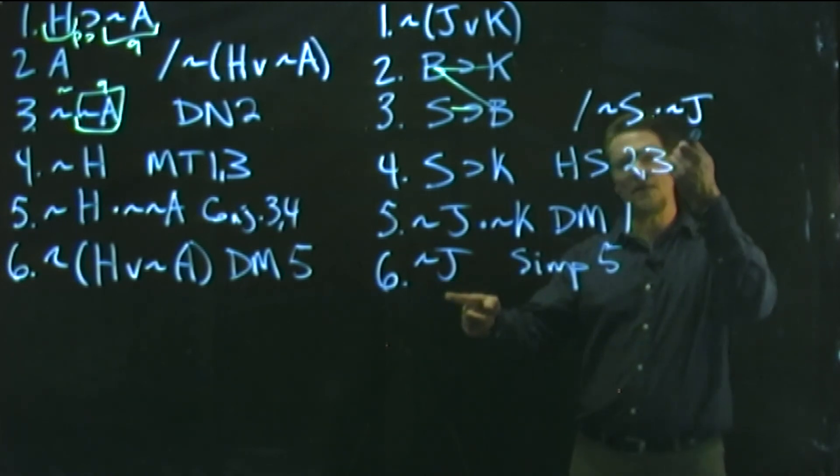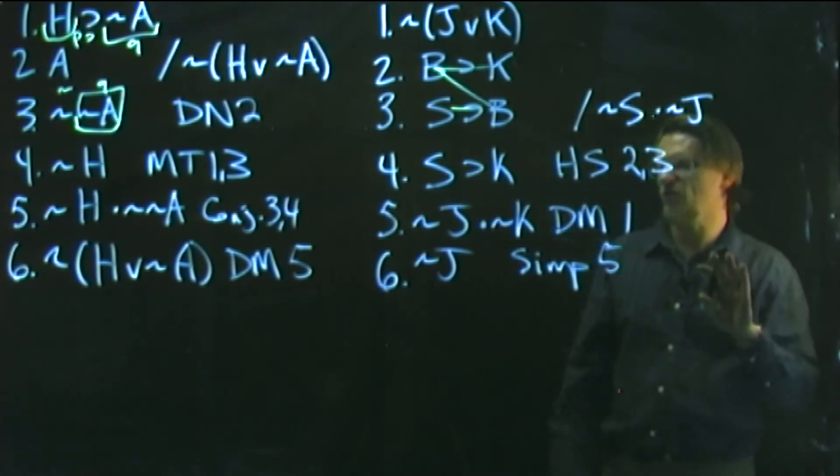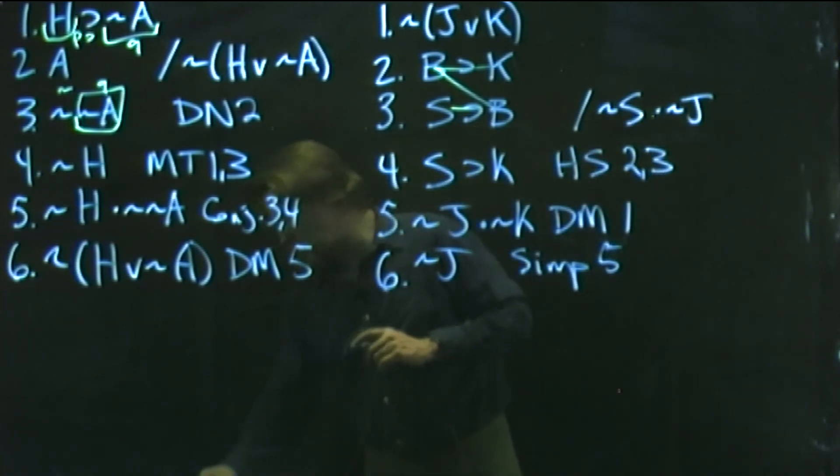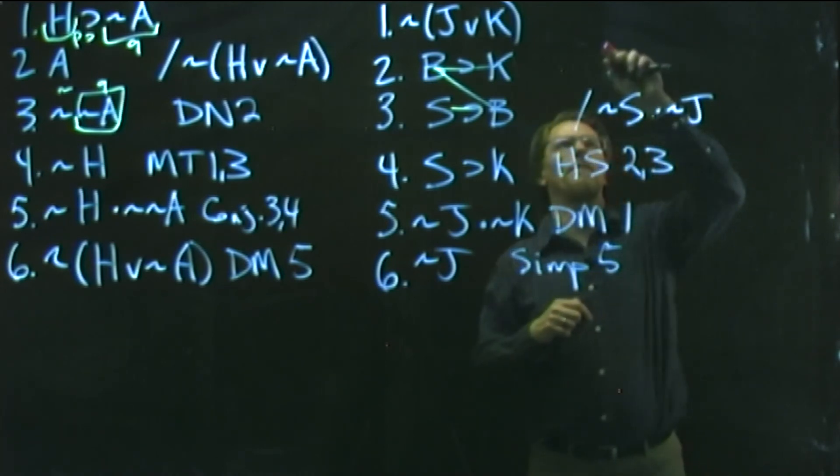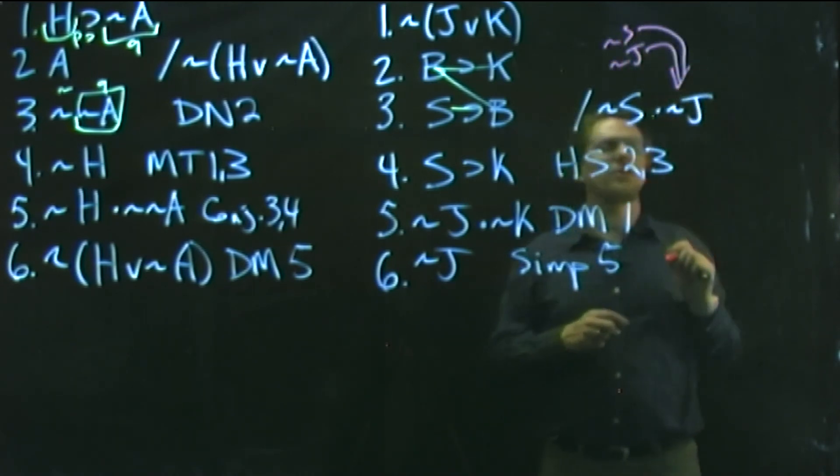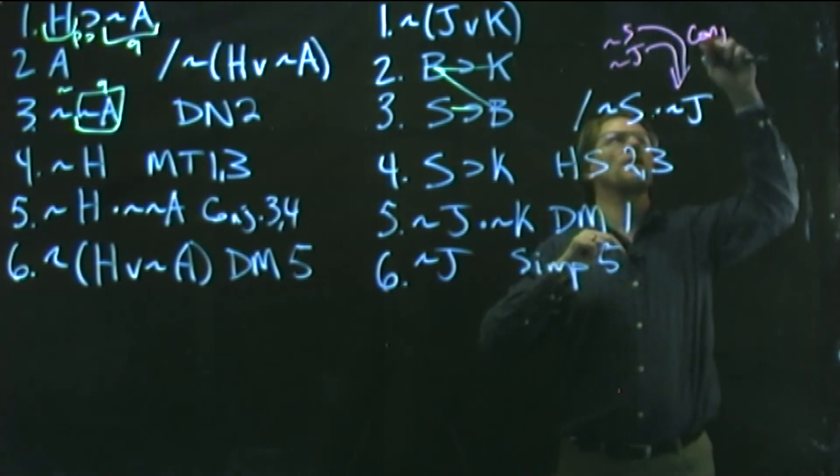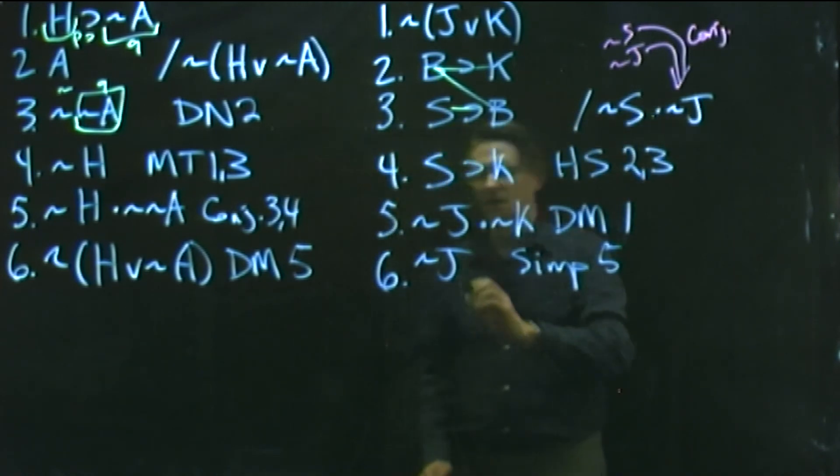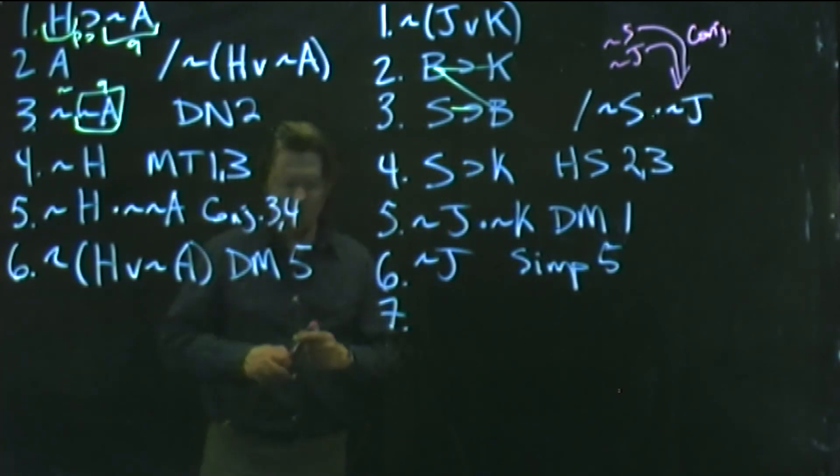I simplify and get tilde J. Is tilde J going to be helpful to me? You bet, it's right there in my conclusion. I've gotten that piece of my conclusion. But I also need to get tilde S. Now that we've used all our premises as of line five, we're reflecting on the conclusion a bit more. I will just note that anytime you're trying to get two things stuck together with a dot, all you need to do is get each piece and then glue them together with conj. We've already got one piece, the tilde J there. Now we want to get tilde S. We haven't used line four yet, so we're going to pay particular attention to line four. We'd like to get the S out of there with a tilde, but to do that we need to get tilde K and use modus tollens.